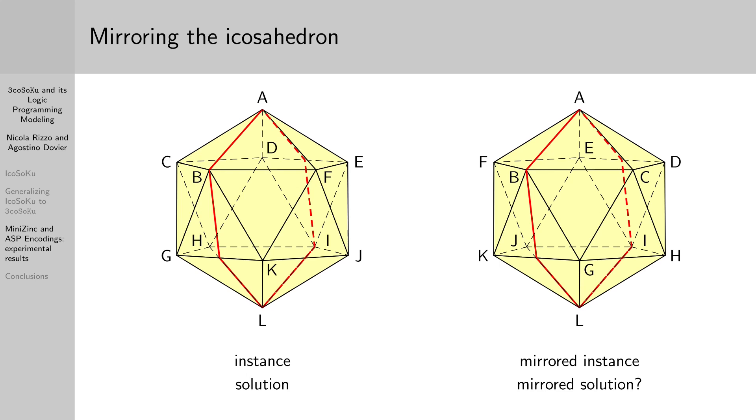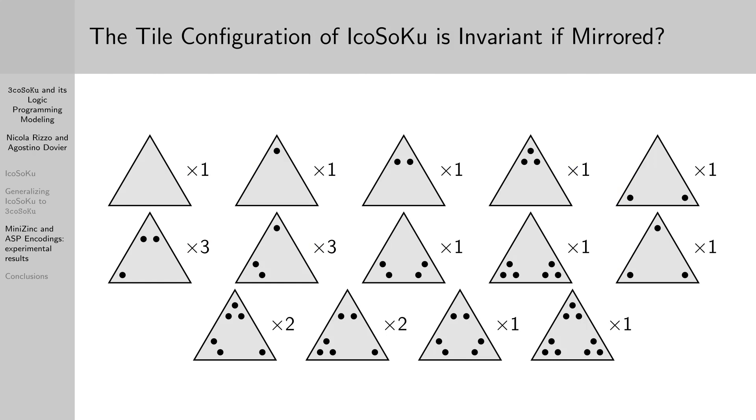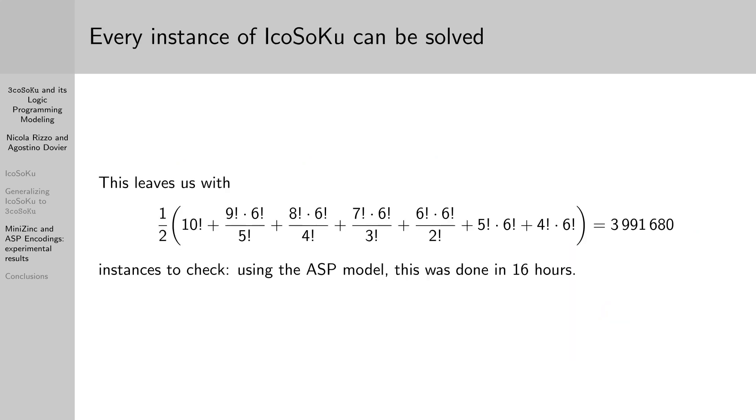We need to see what happens if we mirror the whole tile configuration. Actually, the tiles with at least two equal weights stay the same, since they can be rotated into their specular version. The same does not hold for tiles with three different weights, but they all have their mirrored counterpart, so the game played in the mirror is Icosoku. This lets us cut in half the number of instances to check, leaving us with 4 million instances. We managed to solve them in 16 hours with the ASP model and using common hardware.